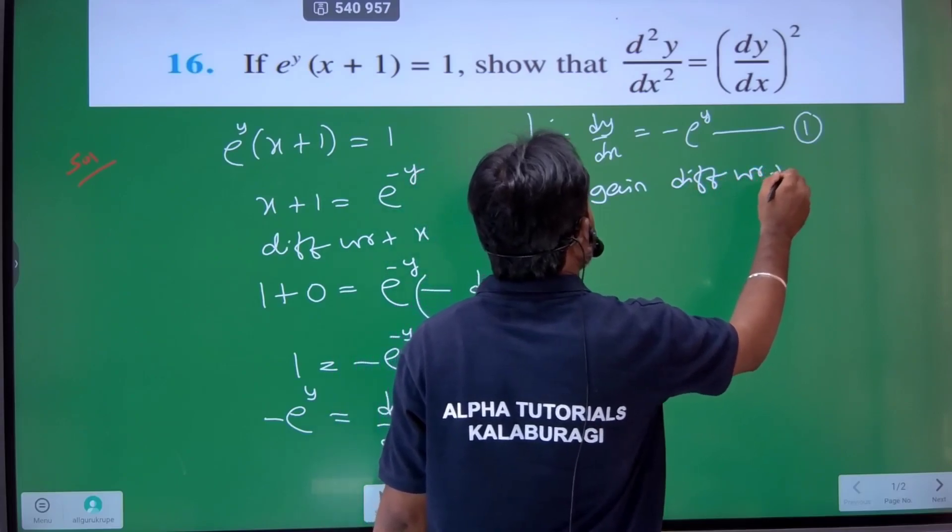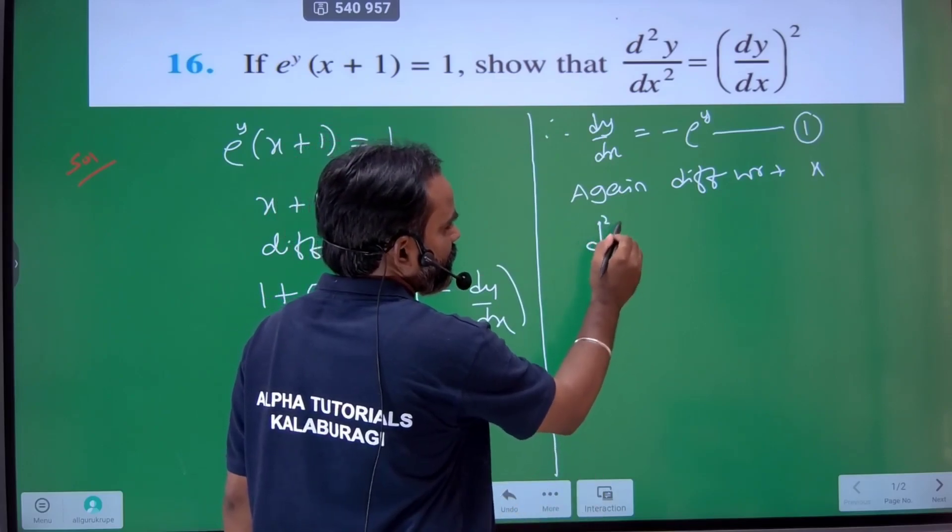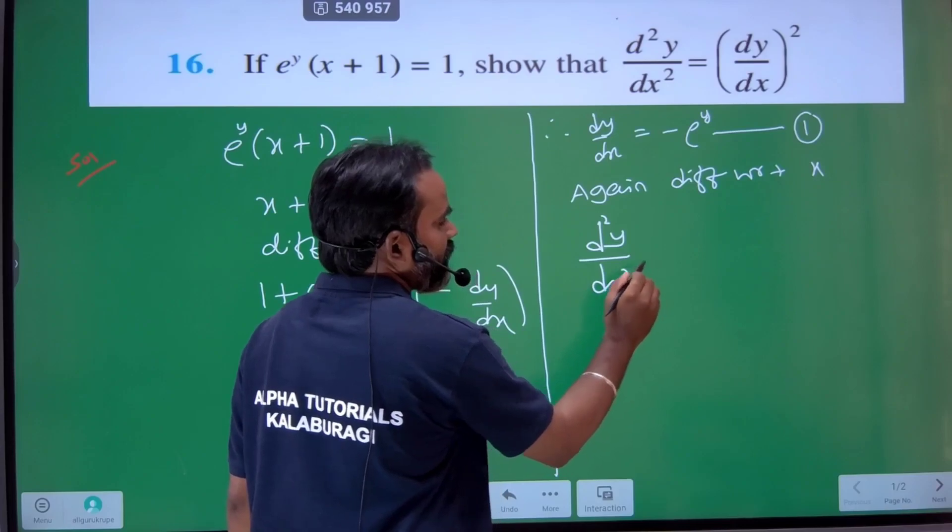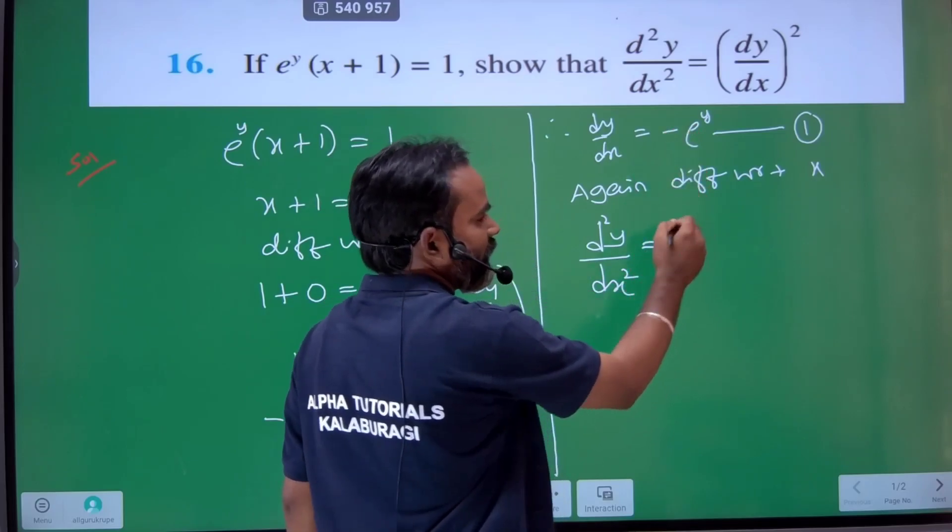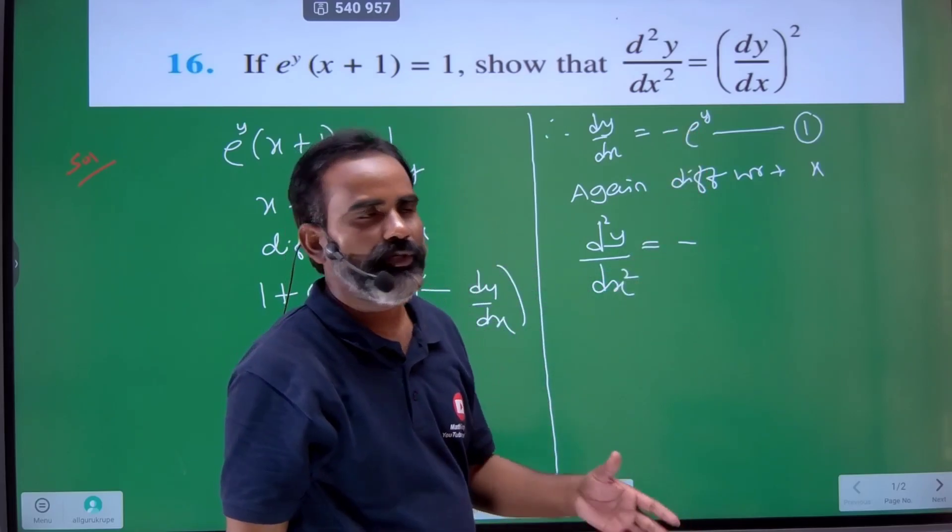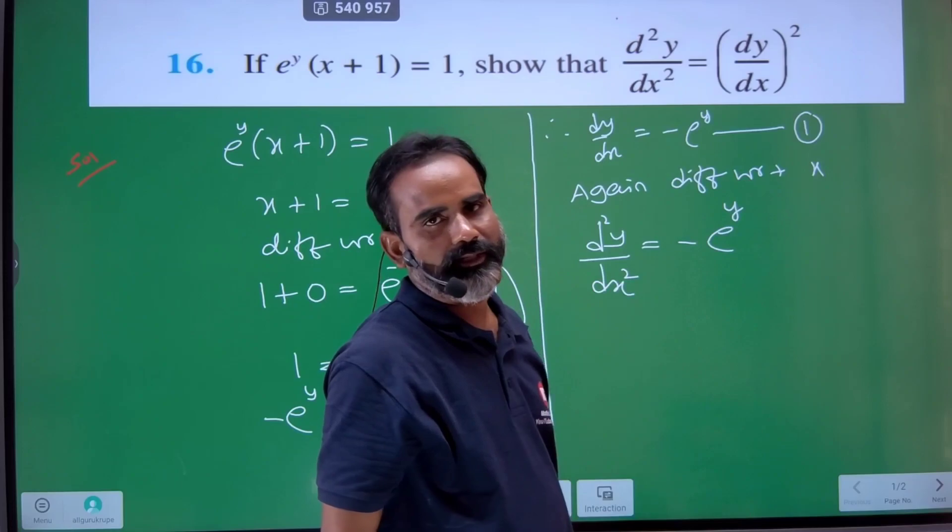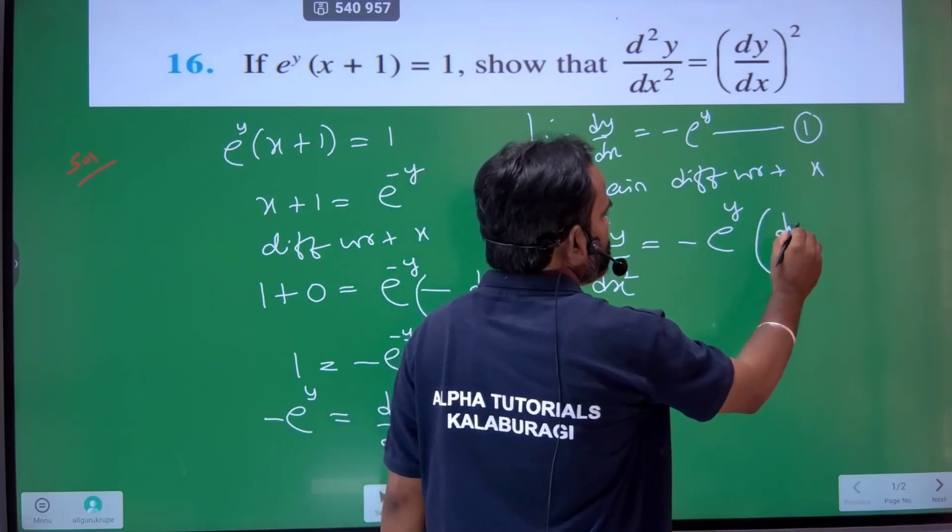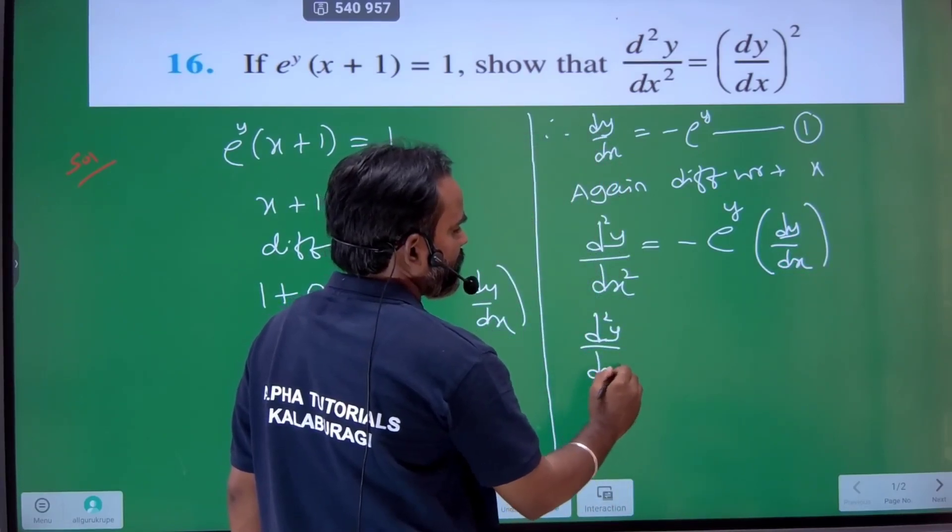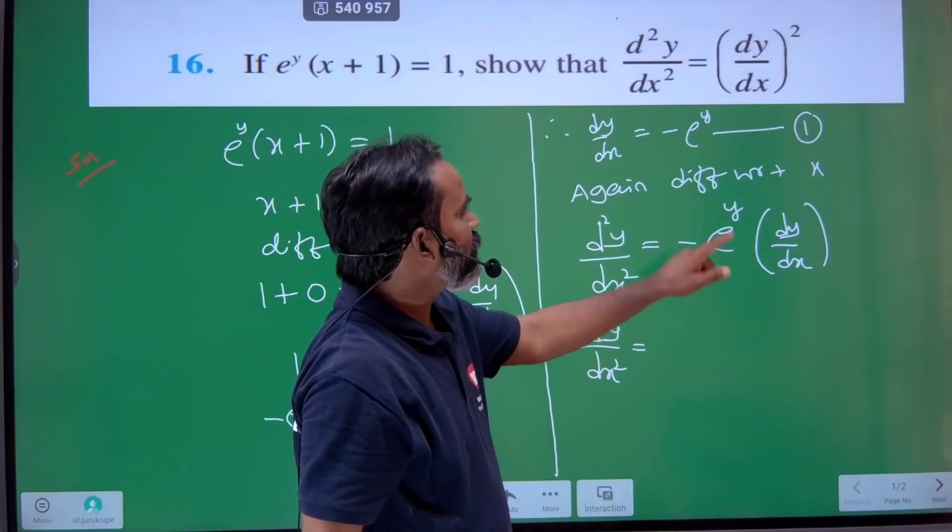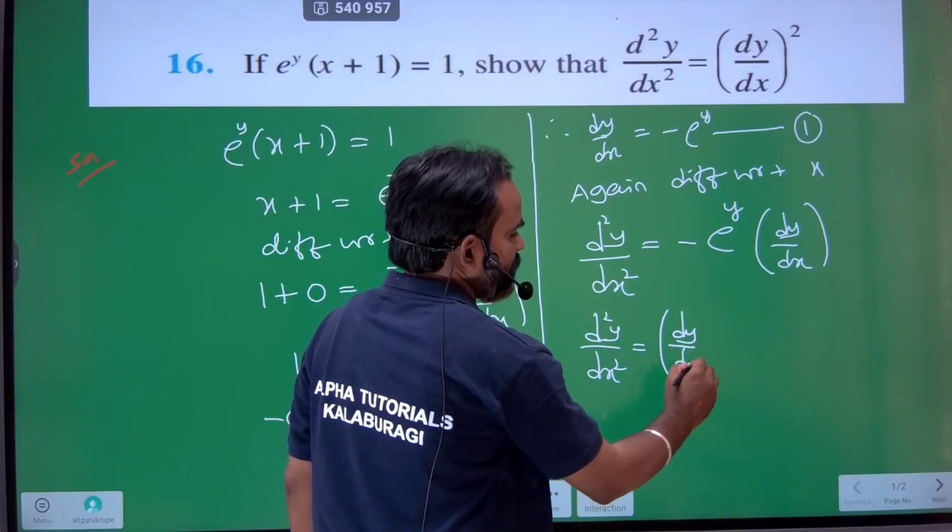Differentiating with respect to x again. The differentiation of dy by dx gives us the double differentiation, d²y by dx². For e power of y, write it as is, then multiply by the derivative dy by dx due to the chain rule.